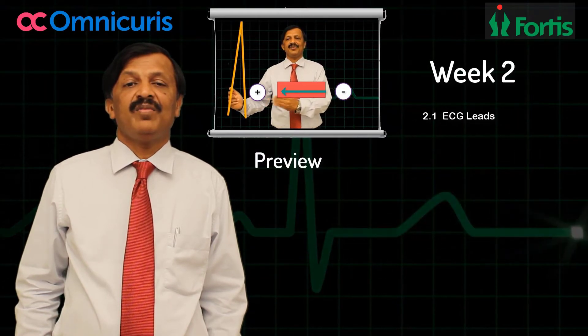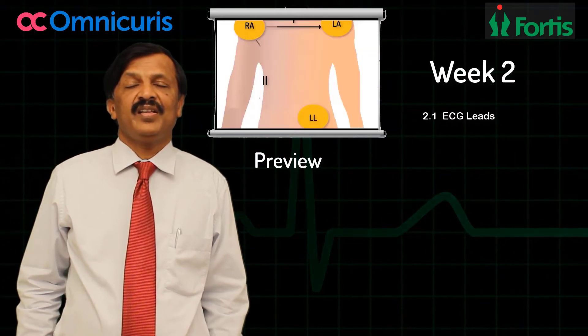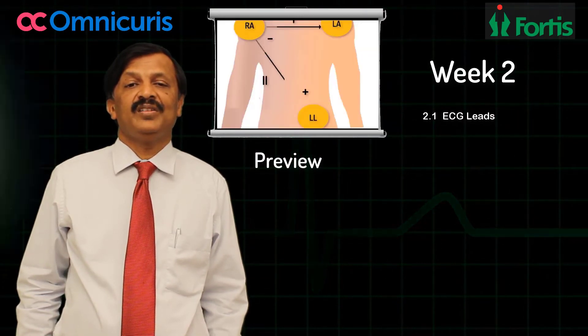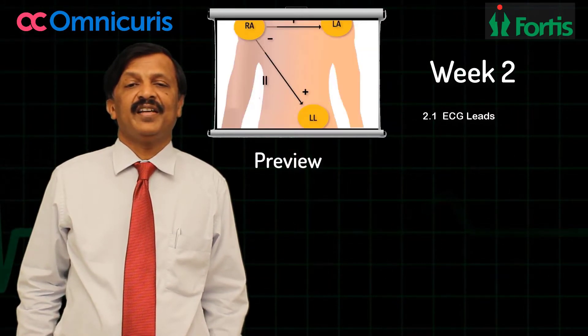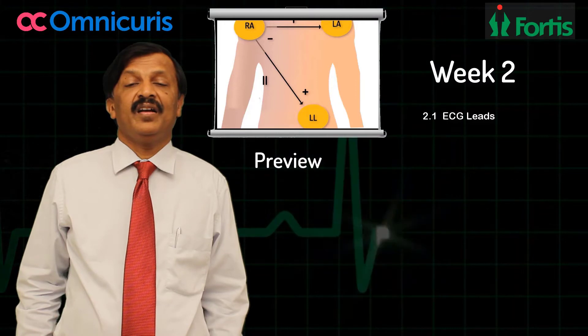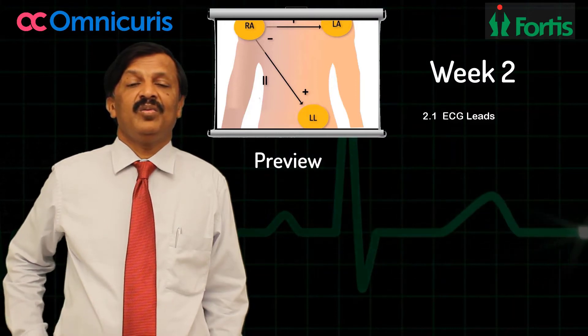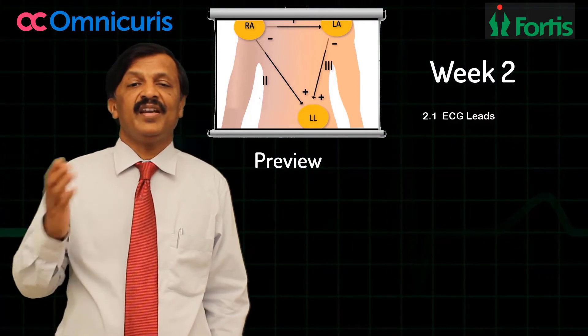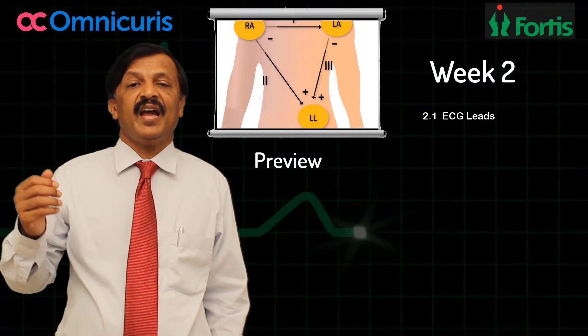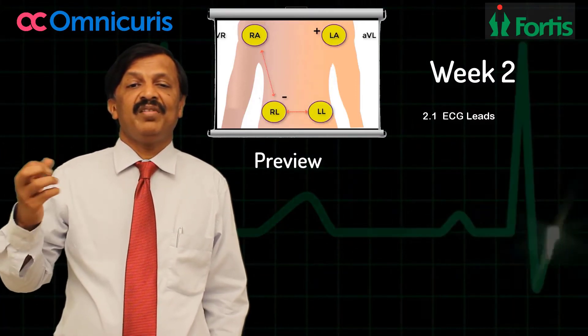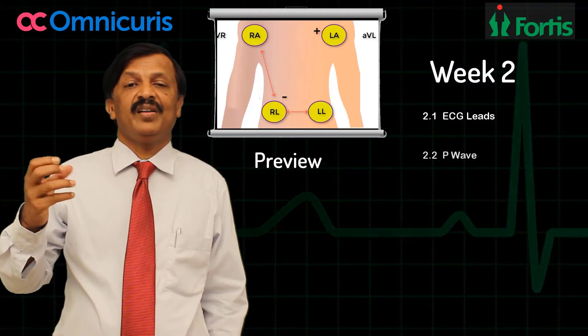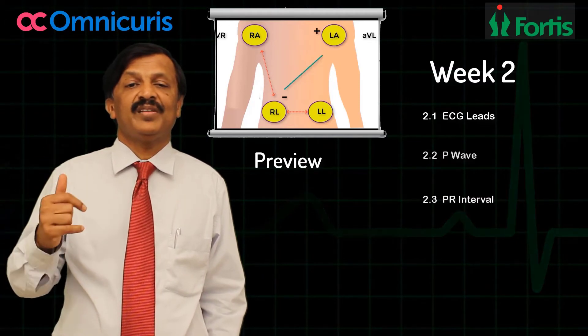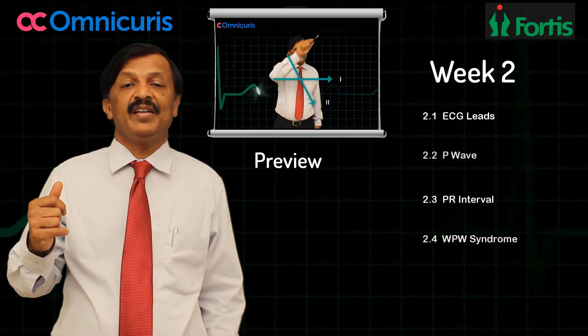In the second week we are going to see how the different leads are connected — Lead 1 to V6 — that is the quality ECG, and what the PR interval is.